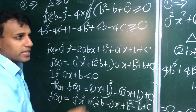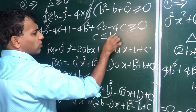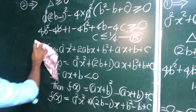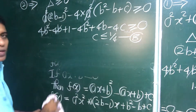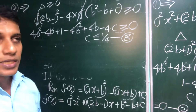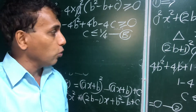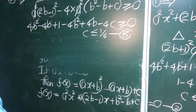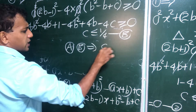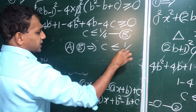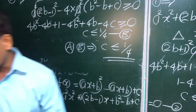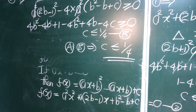Simplifying the second equation's discriminant: the 4b squared and 4b terms cancel, leaving 1 minus 4c ≥ 0, giving c ≤ 1/4 — inequality B. Combining inequalities A and B, the range of c for both quadratic equations to have real roots is c ≤ 1/4.